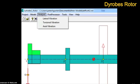Once you build your model, the next step is analysis. In Dyrobes rotor, there are three general categories of analysis: lateral, torsional, and axial vibration. Unlike other rotor dynamics software, with Dyrobes you can run all your analyses from the same model.